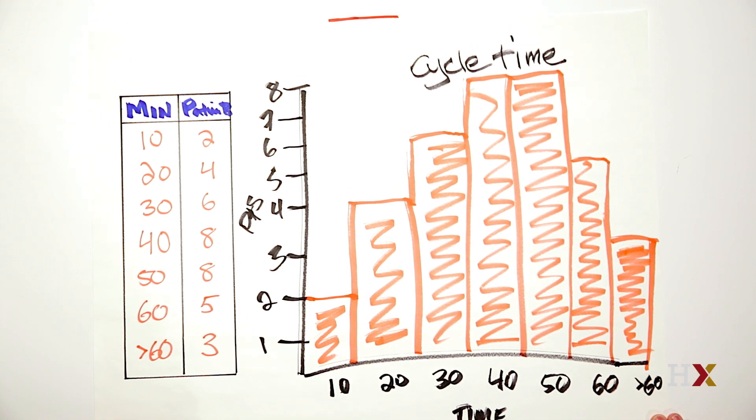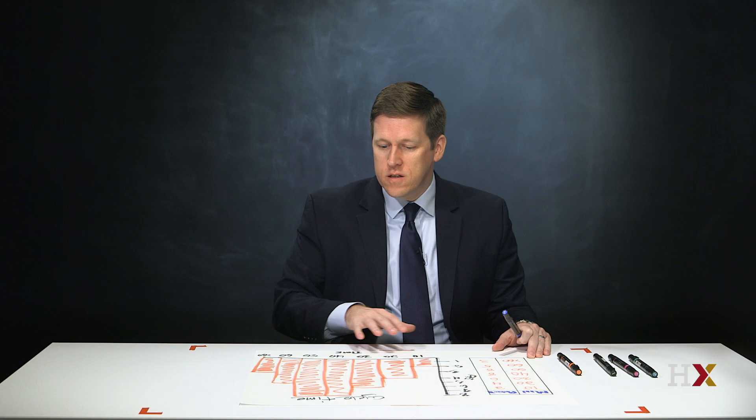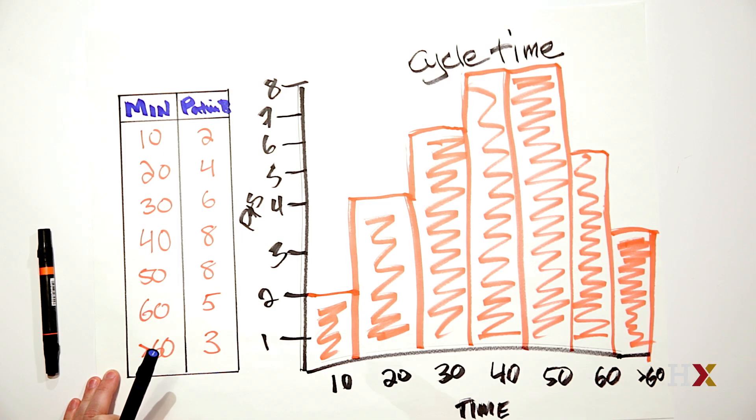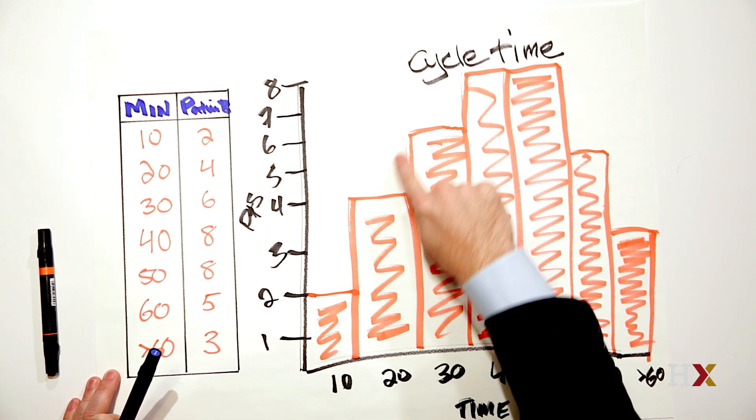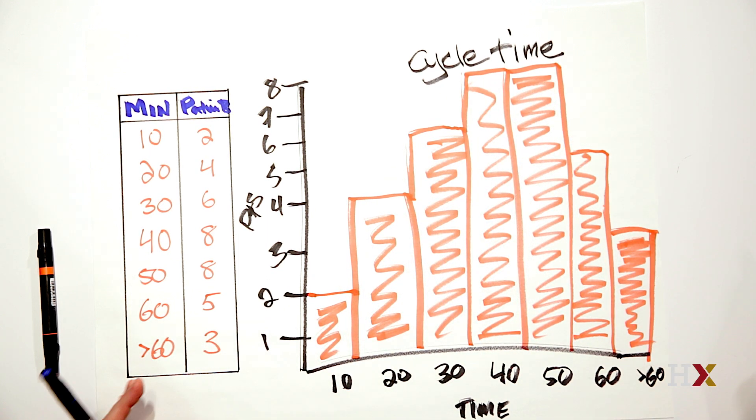Two things to look for at the start is, does this histogram show a distribution that appears symmetrical? If you look at this chart, for example, it looks kind of like a mountain. So it's pretty symmetrical.